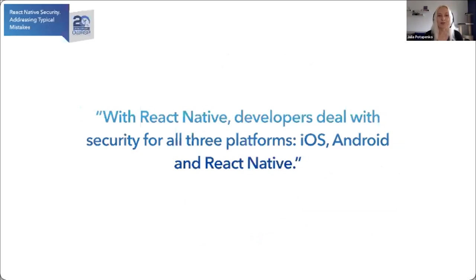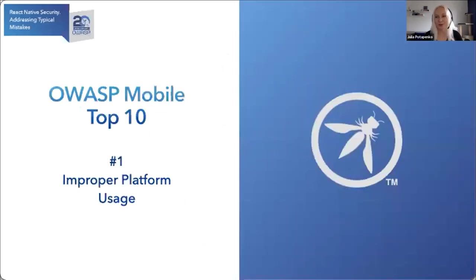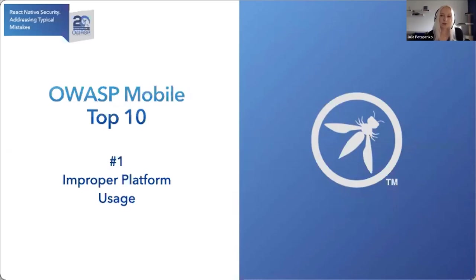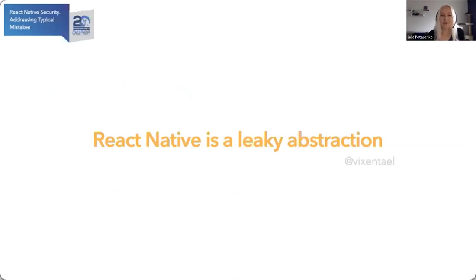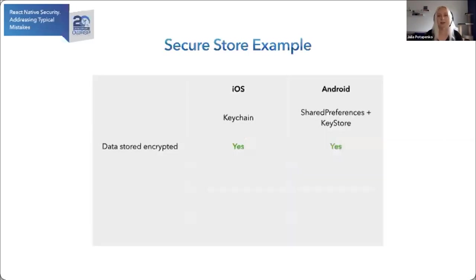With React Native, developers deal with security for all three platforms: iOS, Android, and React Native. I'm sure you're familiar with OWASP Mobile Top 10 — similar to the regular OWASP Top 10, but for mobile applications. The first item is Improper Platform Usage. The sad truth is that if it's hard for iOS and Android developers to use platform-specific security controls, it is even harder for React Native developers, because you need to deal with specifics of all three platforms. React Native is a leaky abstraction — it allows you to abstract from the details of each native platform, but sometimes such details are very important from a security perspective.